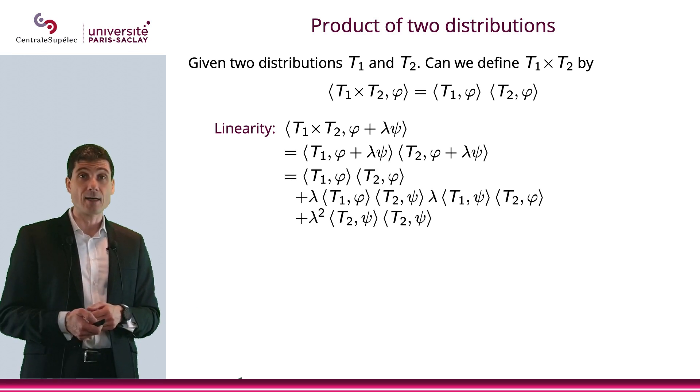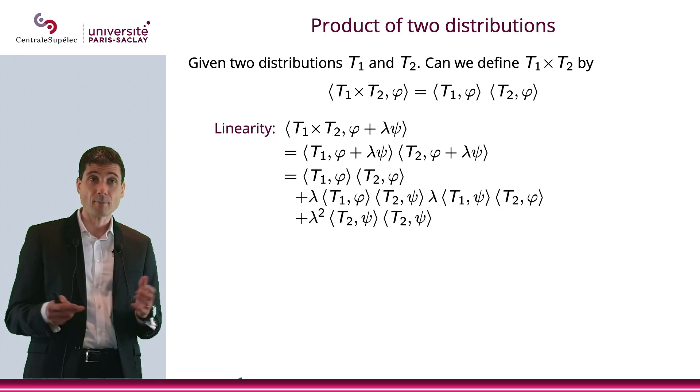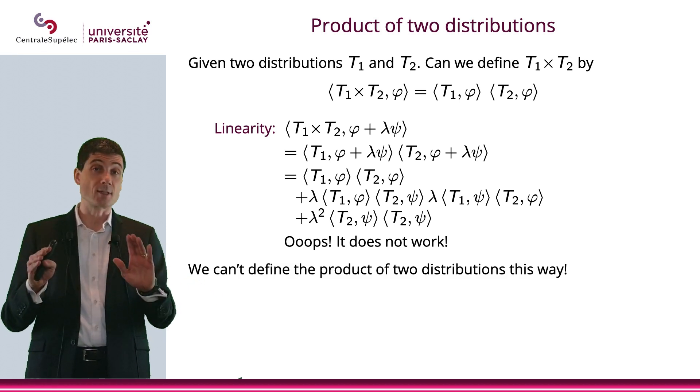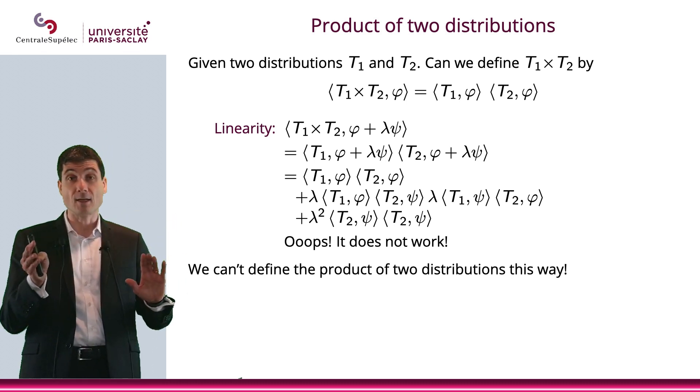I just write what it is. And it doesn't work. We can't define the product of two distributions this way. It is not linear.